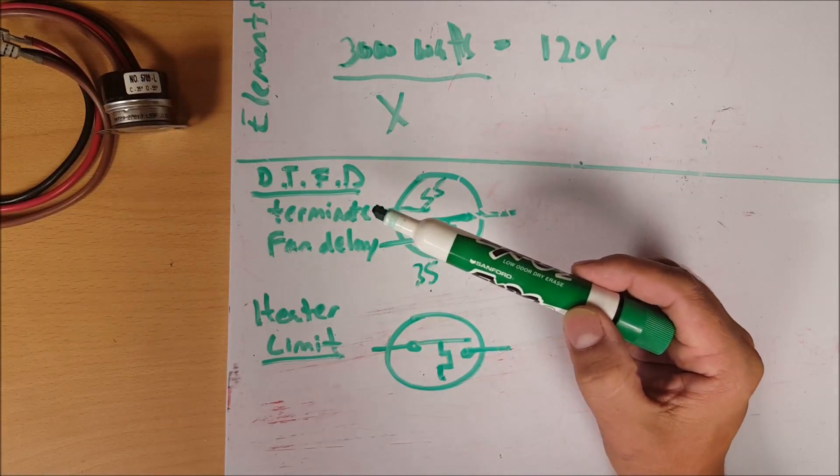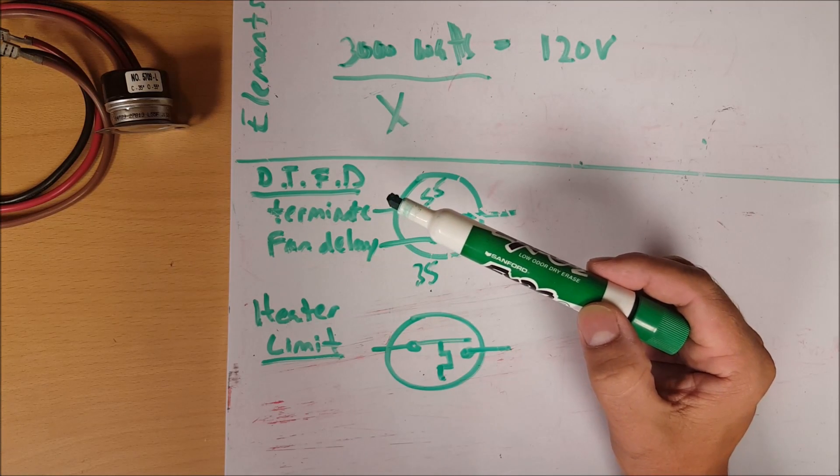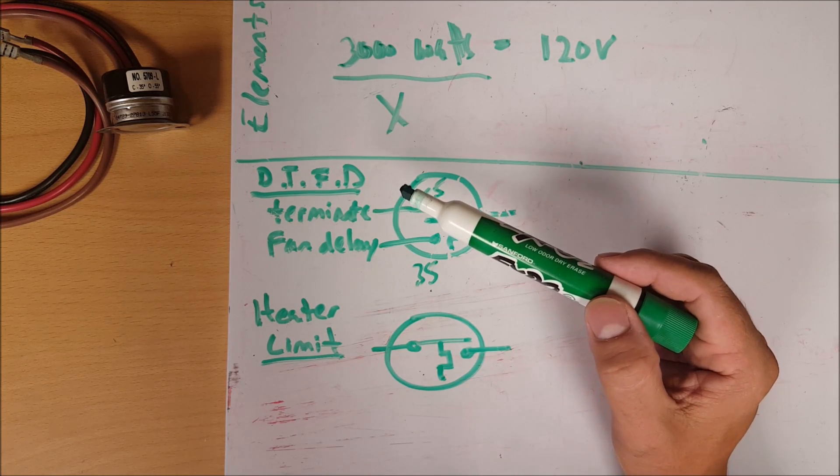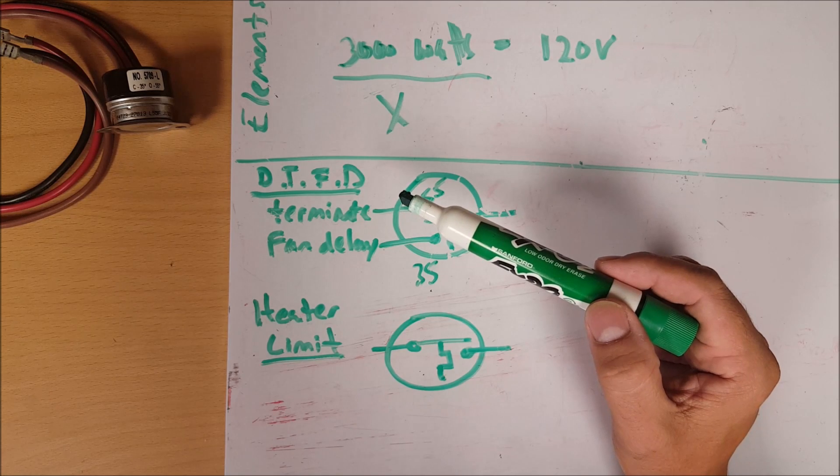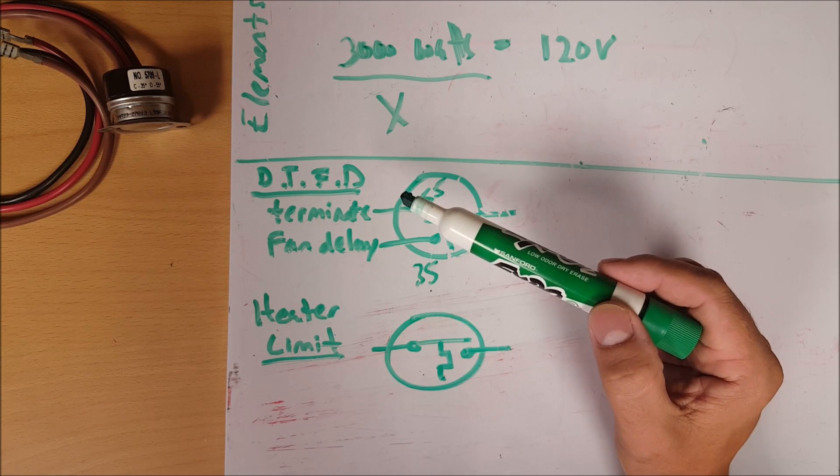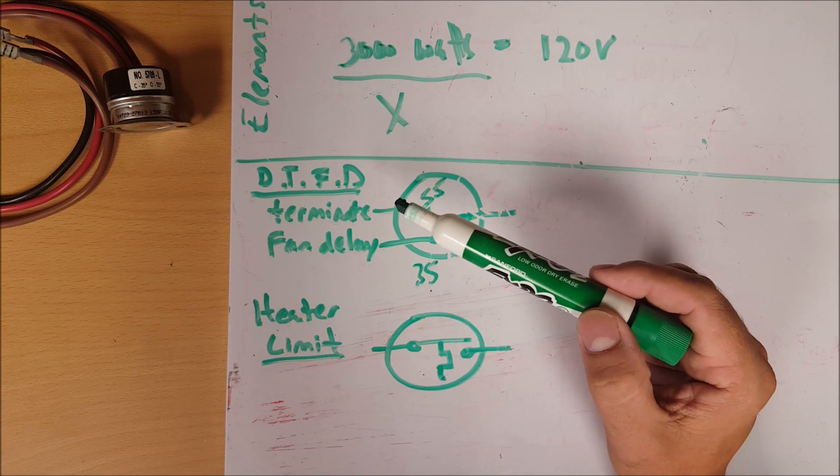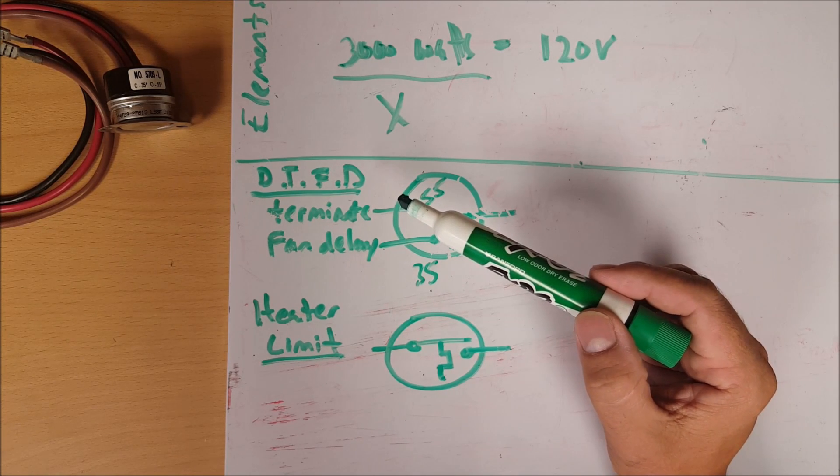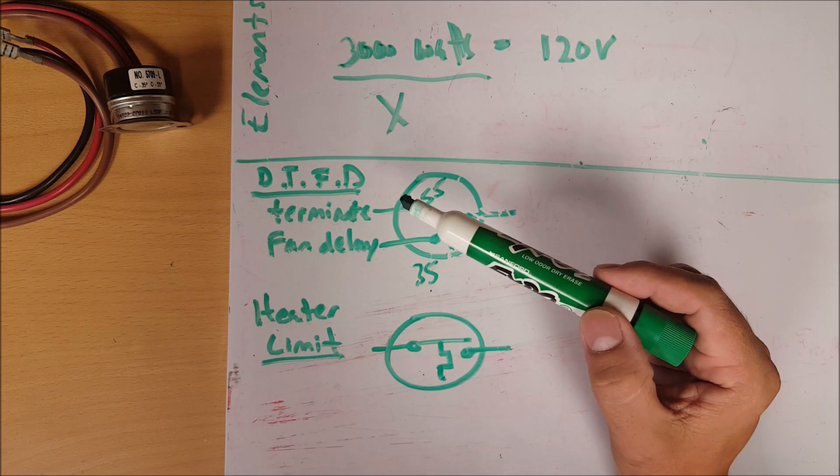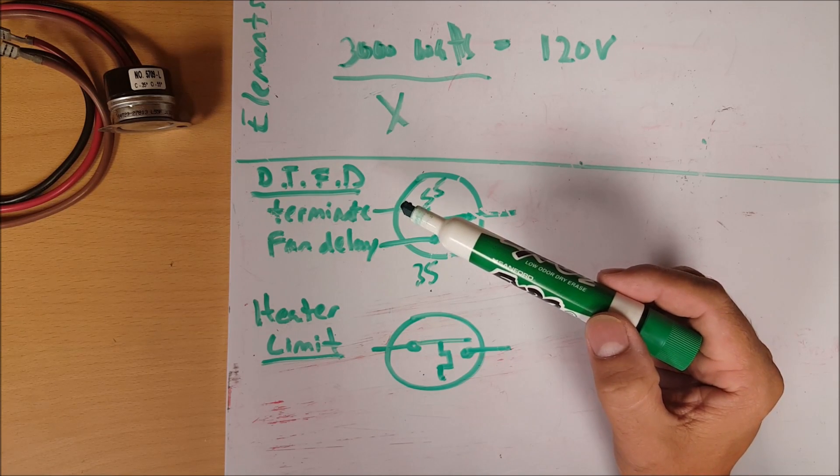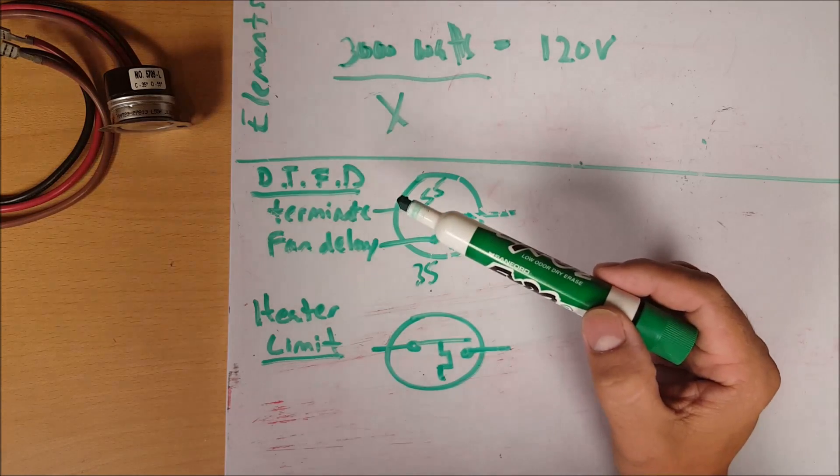Really there's two reasons for delaying your fans. Number one is if you just came out of defrost you have a bunch of water draining or dripping into your drain pan, and hopefully by the time these fans come on all that water has gone down the drain. If the fans were to come on right away, all that water and residual moisture is going to be sprayed into your box.